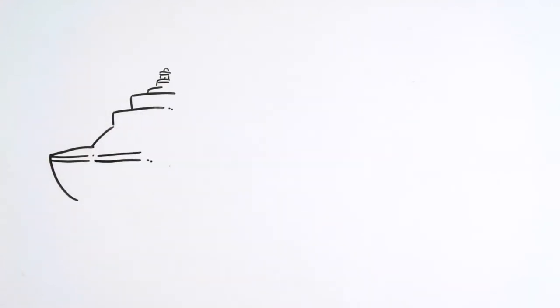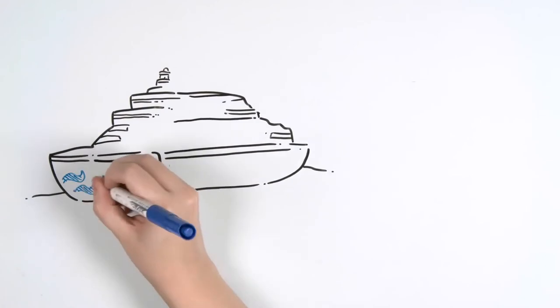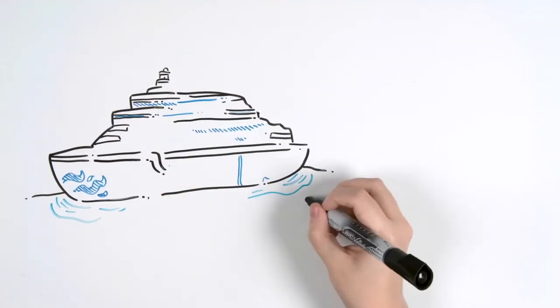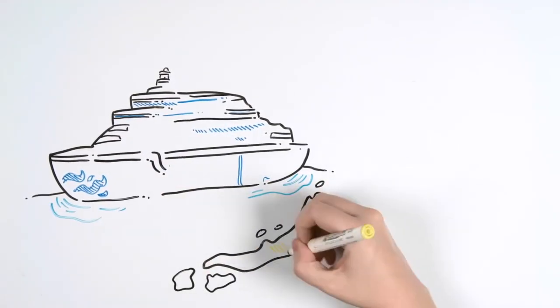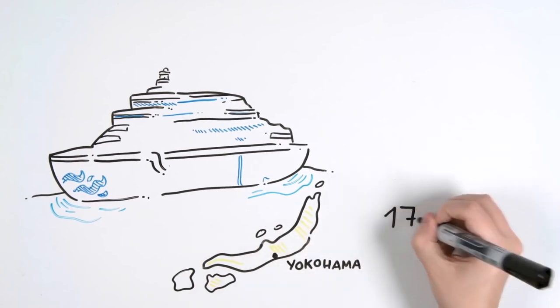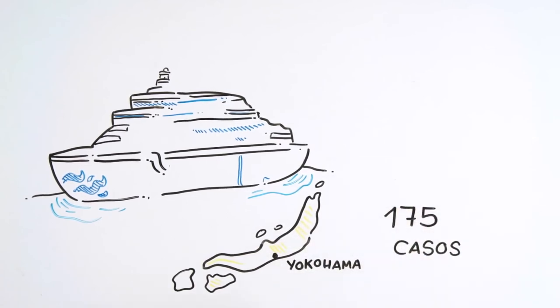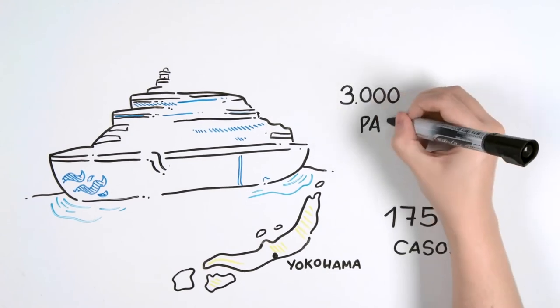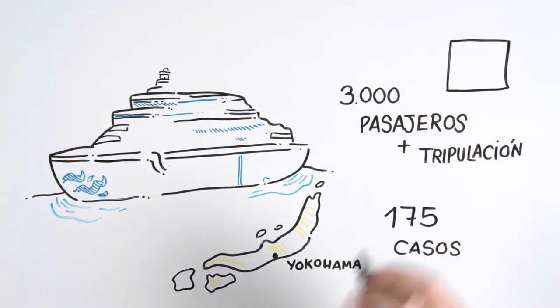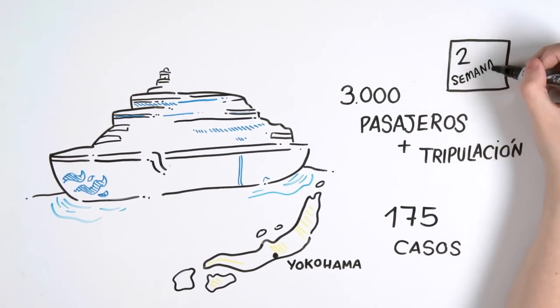In addition, the Diamond Princess cruise ship also has a very high concentration of infected. It is a cruise ship docked in the Japanese port Yokohama. There are 175 cases of a total of 3,000 passengers reported, including the crew. The cruise ship is estimated to remain in quarantine for two weeks.